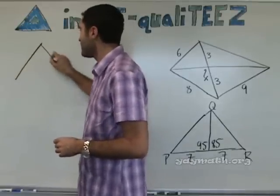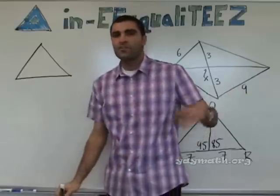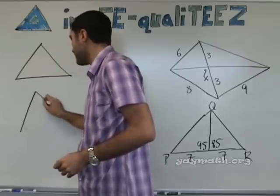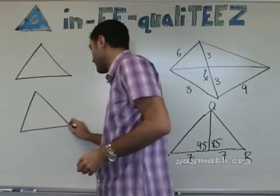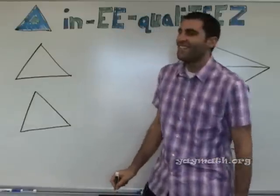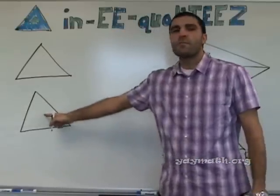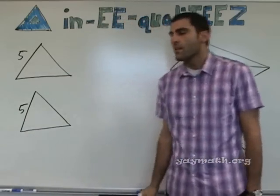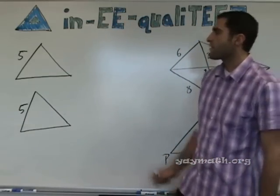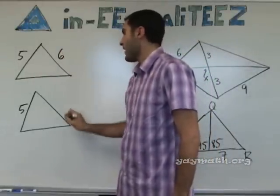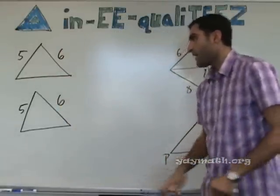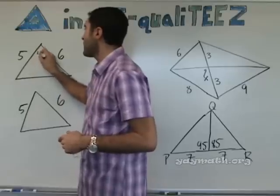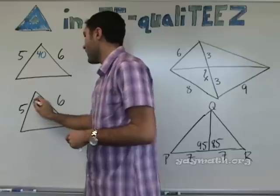Please draw the following on the back of your sheets. Let's say this is 5 and this is 5. Let's say this is 6 and this is 6. And then let's say we'll call this 40 degrees and we'll call this 20 degrees.